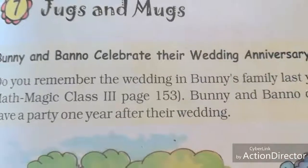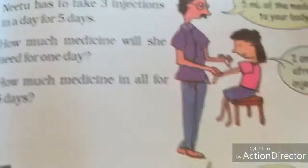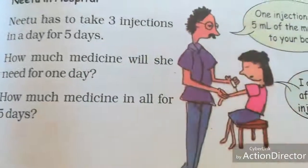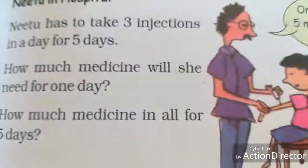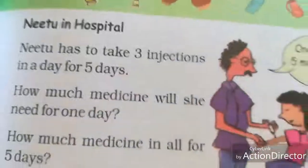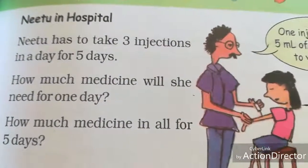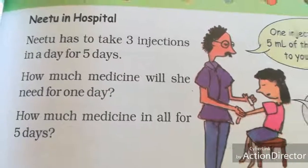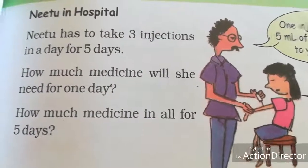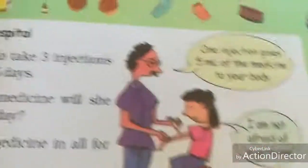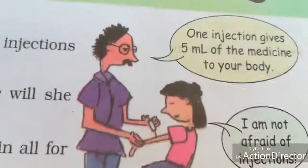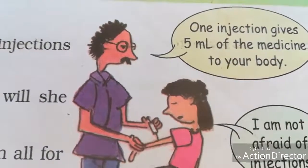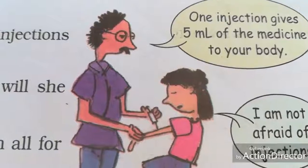Now open your book to page number 77. Today we are going to see problems using ml and liter. We have to solve. Look at here: Neetu is in hospital. She has to take 3 injections in a day, for 5 days. One injection gives 5 ml of medicine to your body. The doctor said one injection gives 5 ml of medicine.